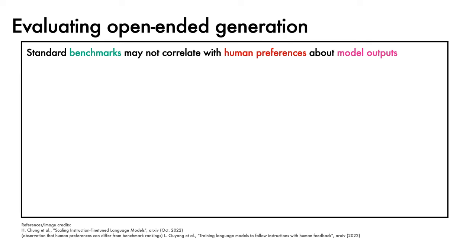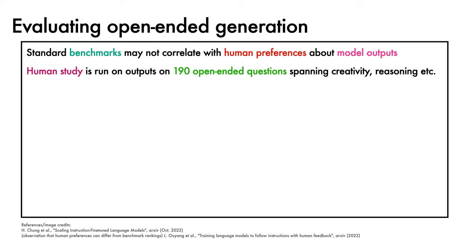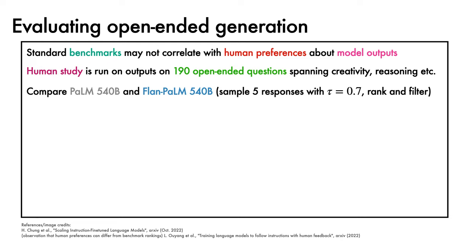One observation from prior work is that standard benchmark performance may not correlate with human preferences about model outputs when it comes to long-form answers about open-ended requests. For this reason, the authors run a human study on model outputs across 190 open-ended questions spanning topics like creativity and reasoning. Outputs from PaLM 540B and Flan-PaLM 540B are compared by sampling five model responses with a temperature of 0.7, then ranking the responses and applying a heuristic filter to discard low-quality answers.